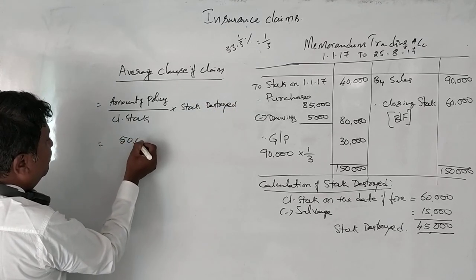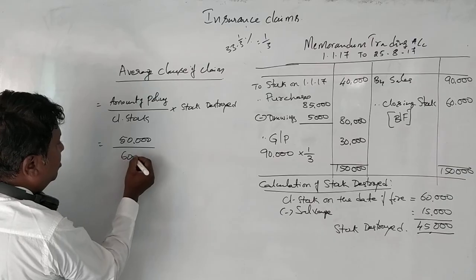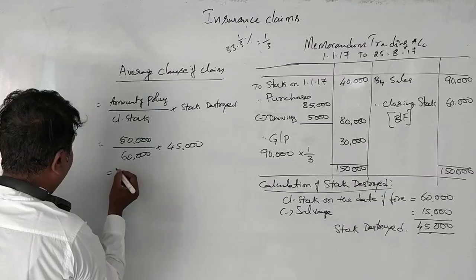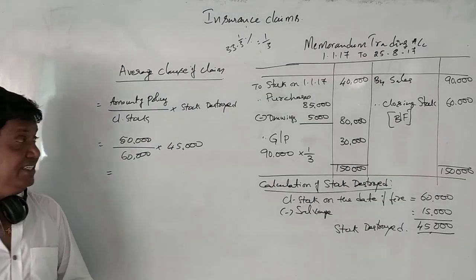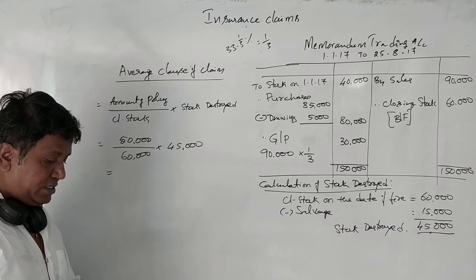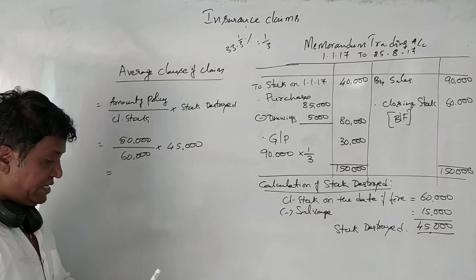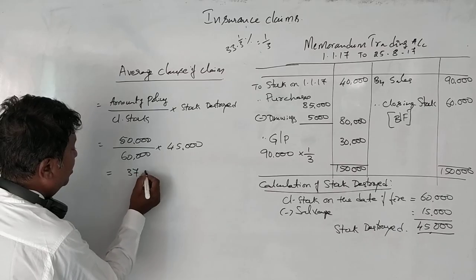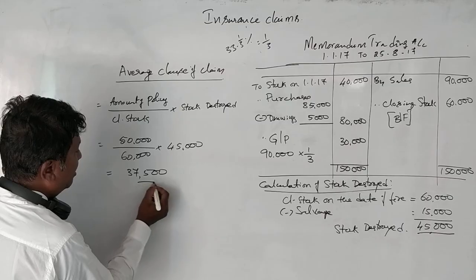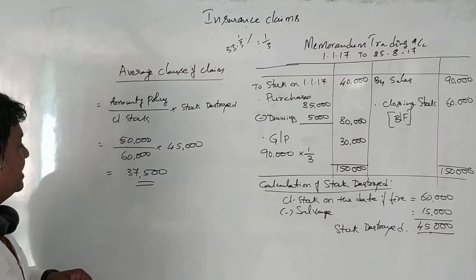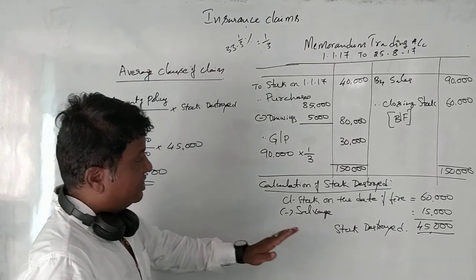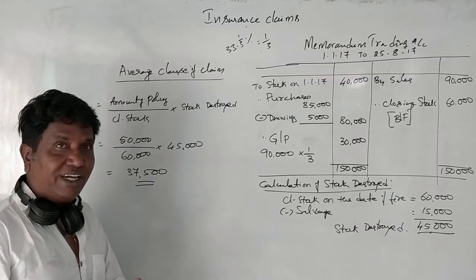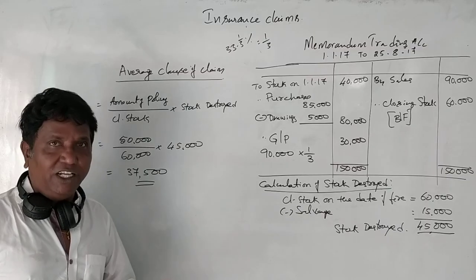Policy is ₹50,000, closing stock is ₹60,000, and stock destroyed is ₹45,000. Applying the average clause: (₹50,000 ÷ ₹60,000) × ₹45,000 = ₹37,500. Therefore the insurance claim to be made on the insurance company is ₹37,500.